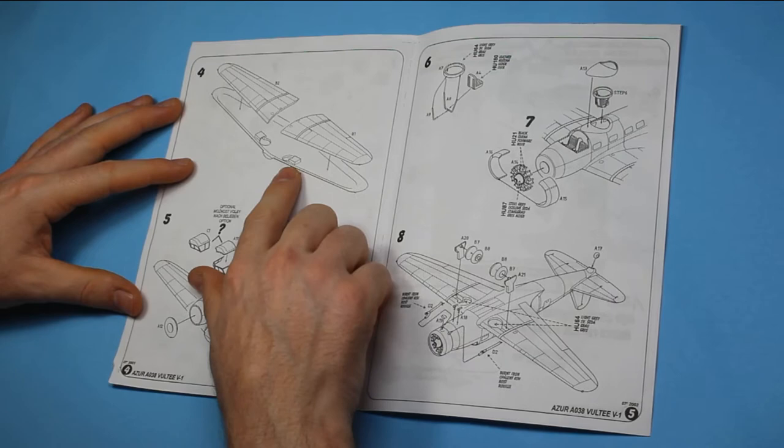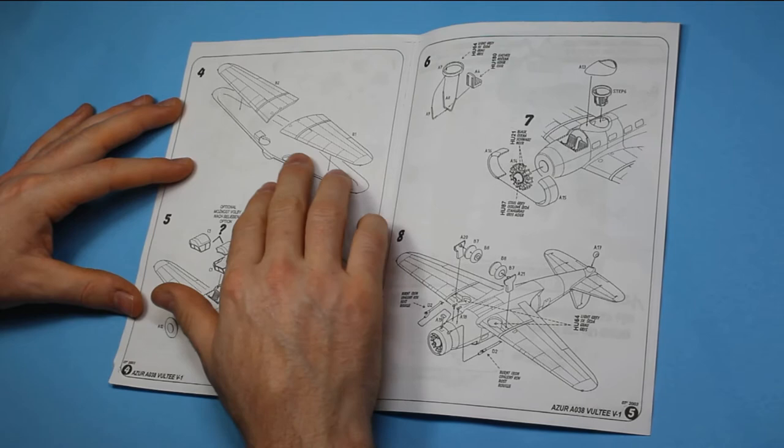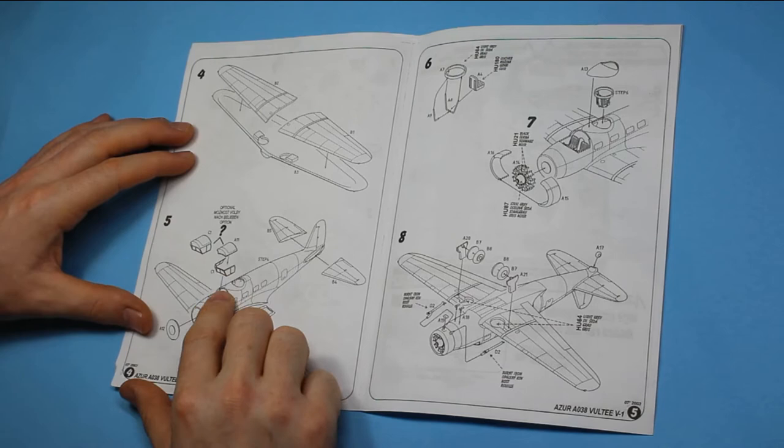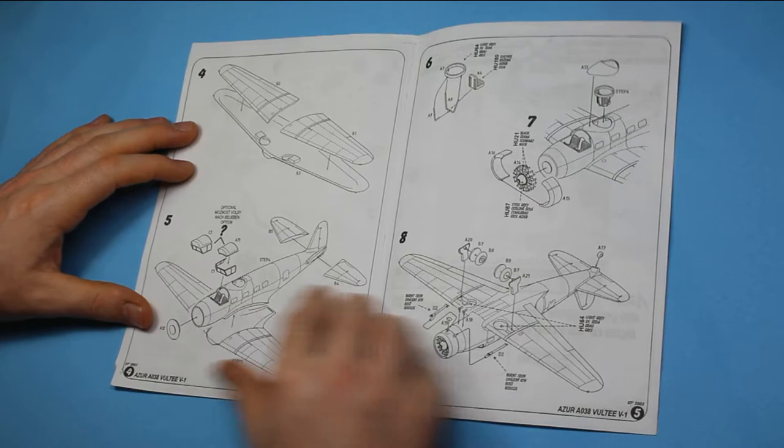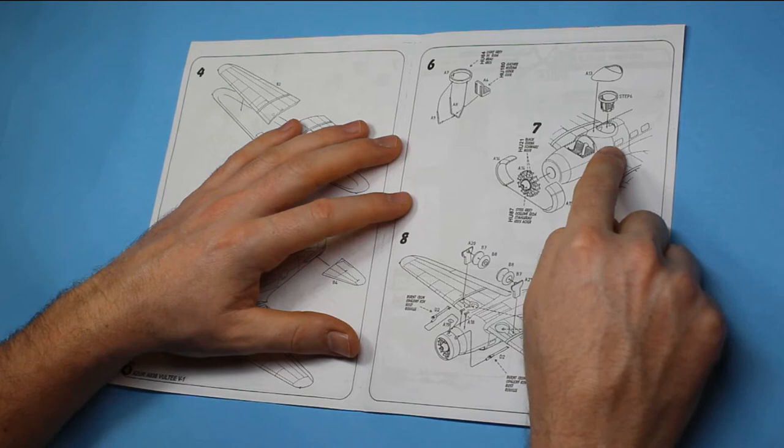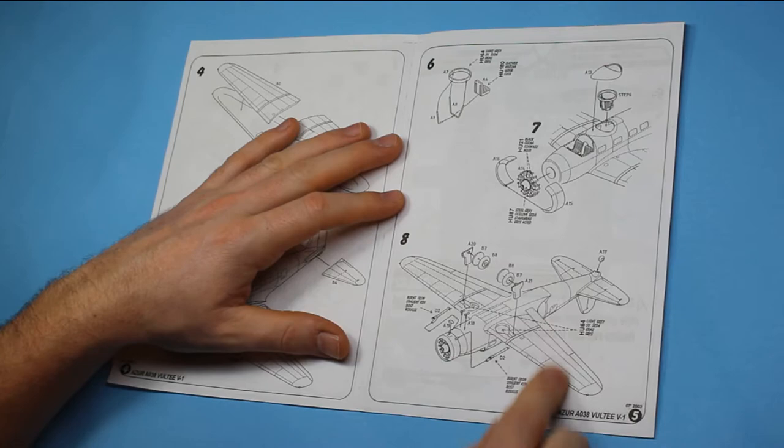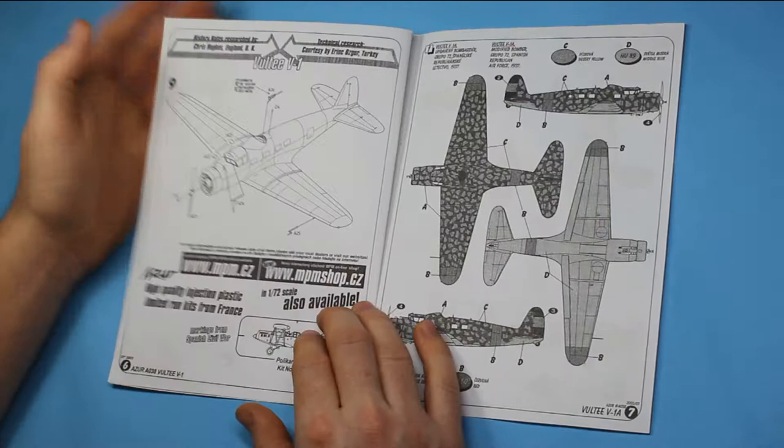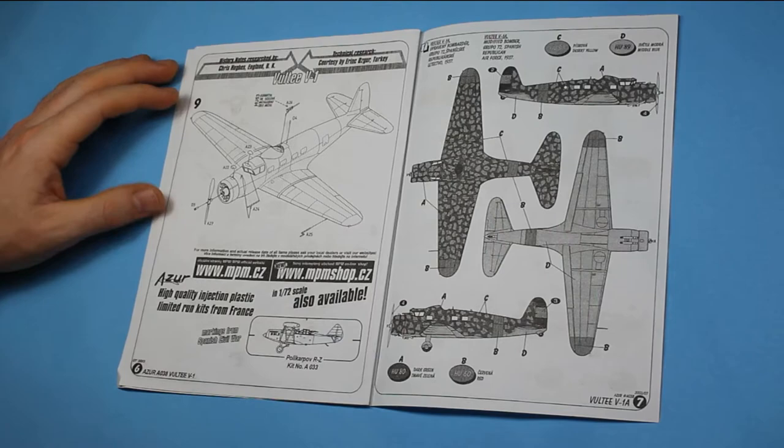And then straight away the fuselage halves are together, we're putting on the horizontal stabilizers and the wing is going together made up with two parts to make up the upper part of that wing. Then there's two options here for canopies which we'll look at in a minute when we get into the kit. And then we've got a little machine gun area here, sort of turret in the top just behind the cockpit which comes on and then you start making up the engine which the cowling is in two pieces there, then the undercarriage and a few other small parts with exhaust and I think that completes the build.